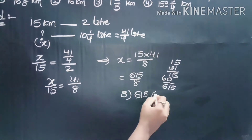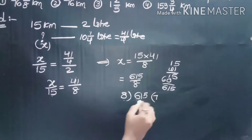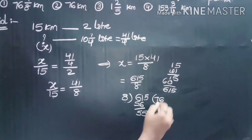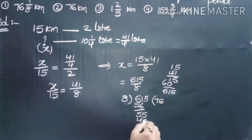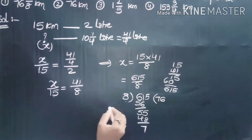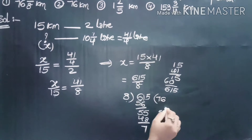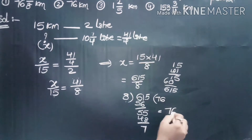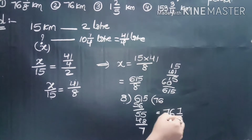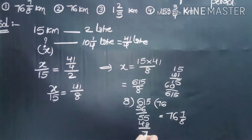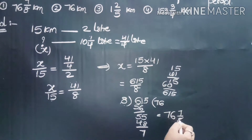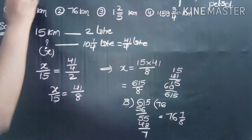Now dividing 615 by 8: 8 sevens are 56, remainder gives us the quotient 76 with remainder 7. So the fraction is 76 and 7/8. The distance covered is 76 and 7/8 kilometers. First option.